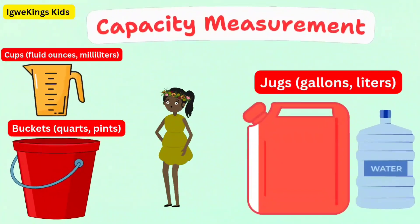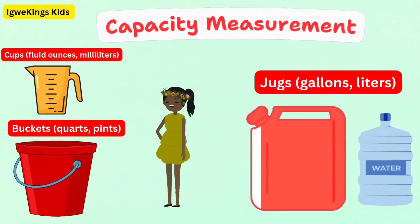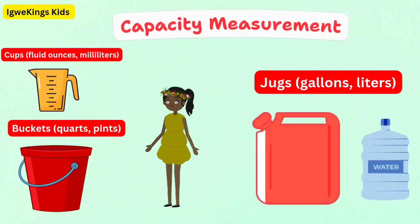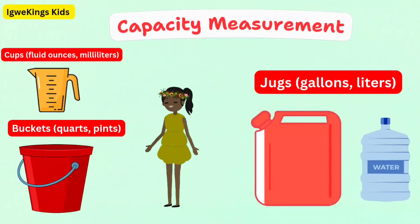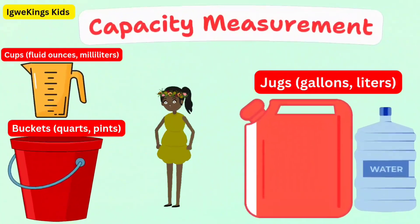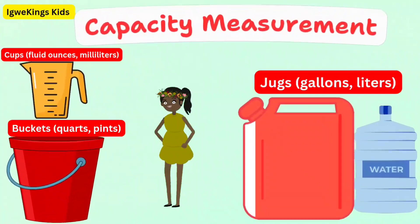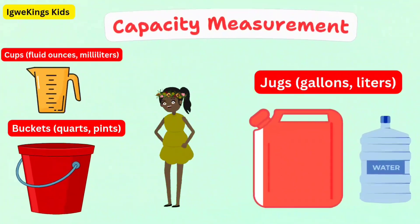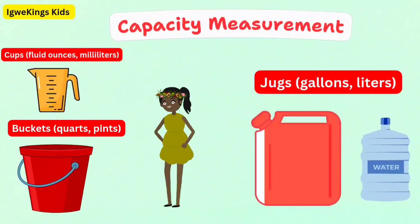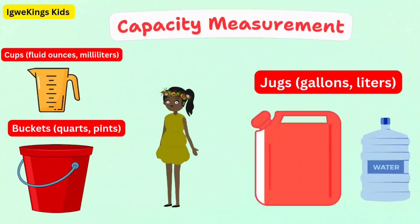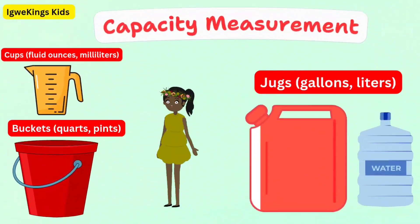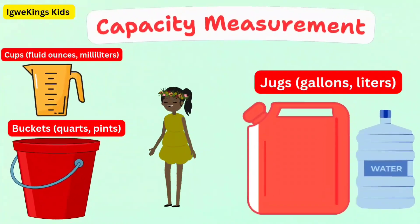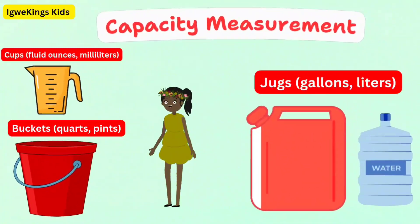We can also measure capacity using jugs — gallons and liters — perfect for measuring larger amounts of liquids like water or juice; and buckets — quarts and pints — useful for measuring really big amounts of liquids like water or sand. We can measure capacities using cups, milliliters, or liters.